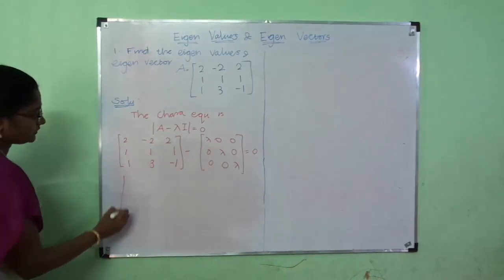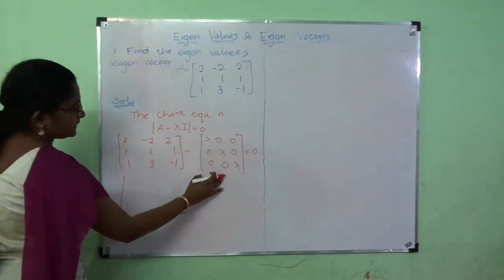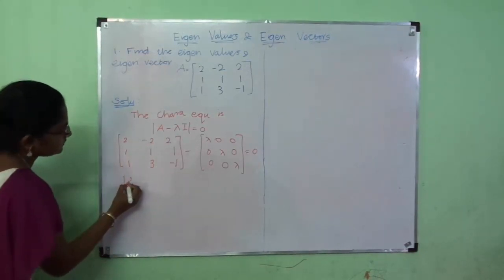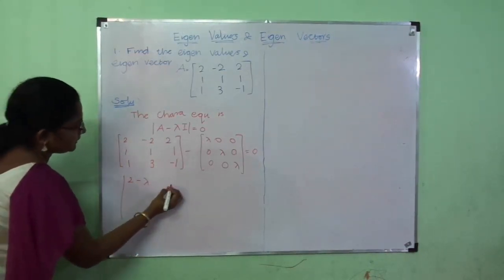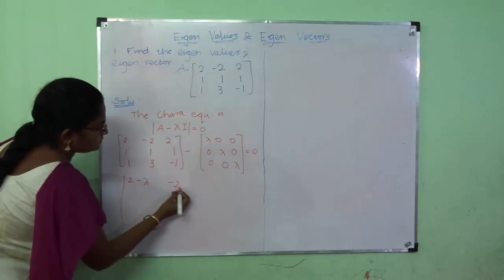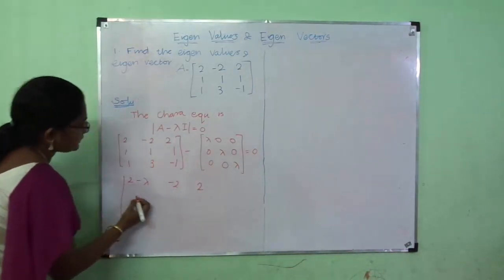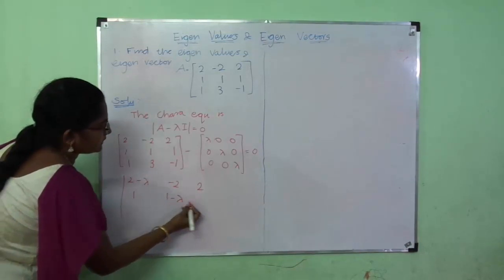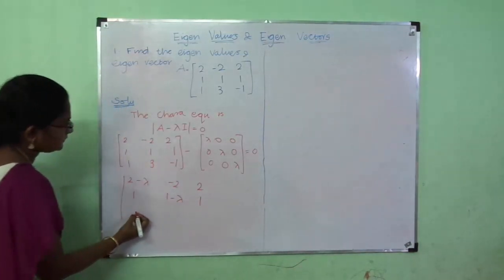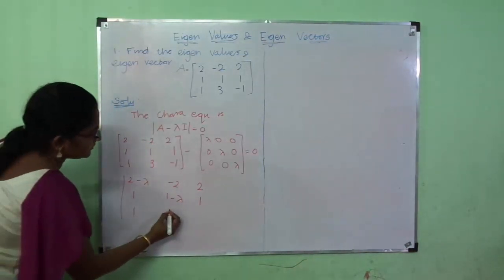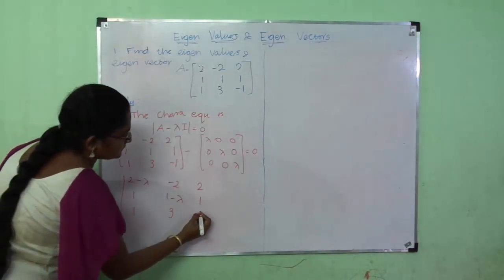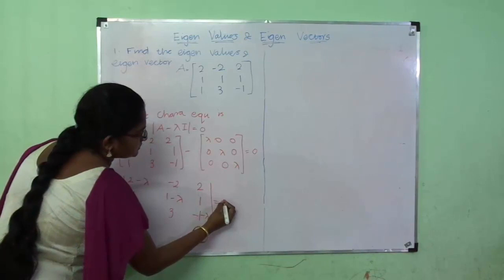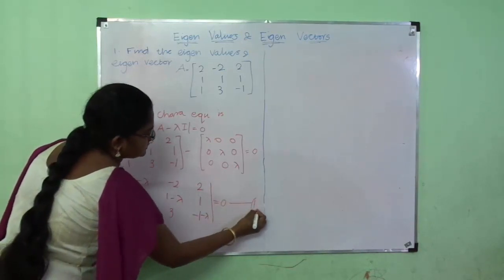We subtract λI from matrix A. The result is: [[2-λ, -2, 2], [1, 1-λ, 1], [3, 3, -1-λ]], and this determinant is equal to 0. This is the characteristic equation.